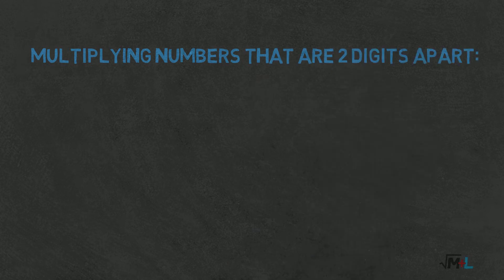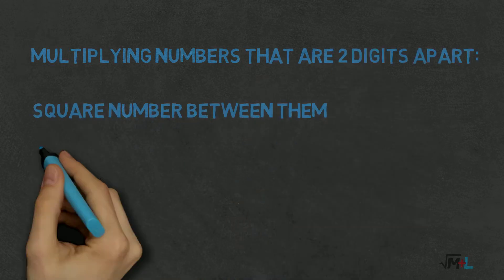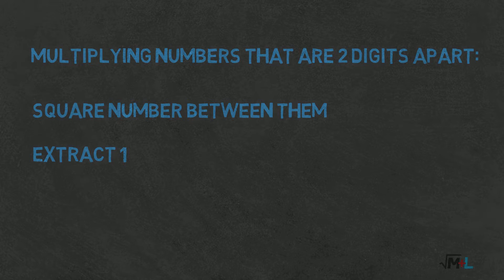So here is our method of multiplying numbers that are two digits apart. Square the number between them and subtract one. And you can stop at that.